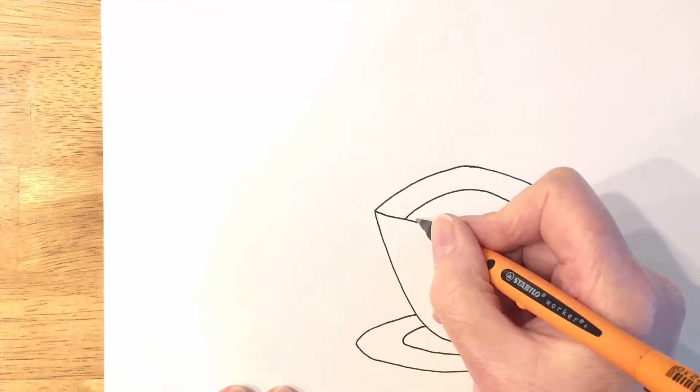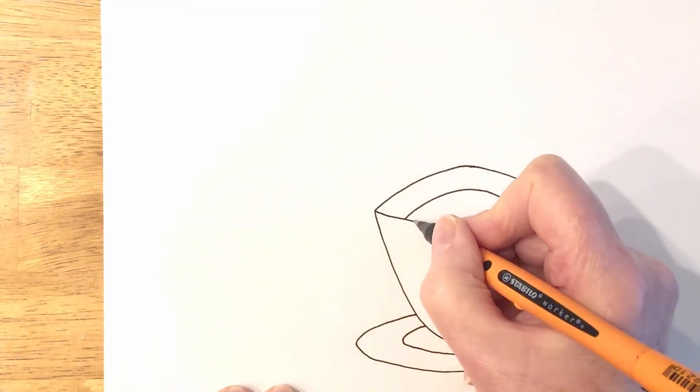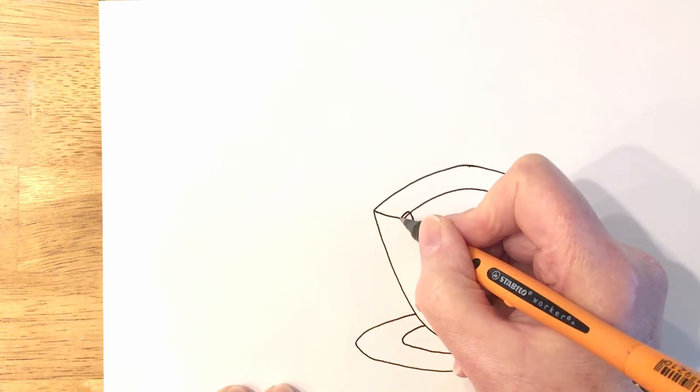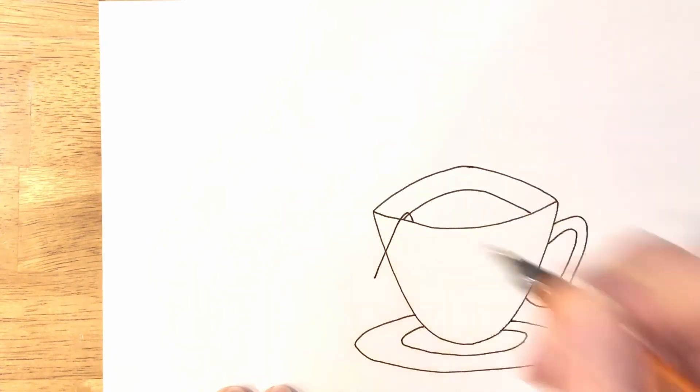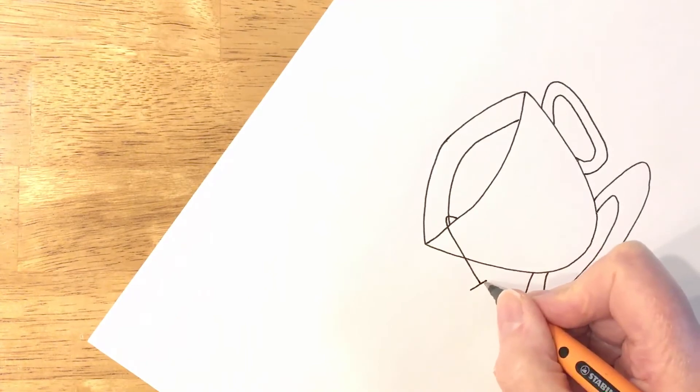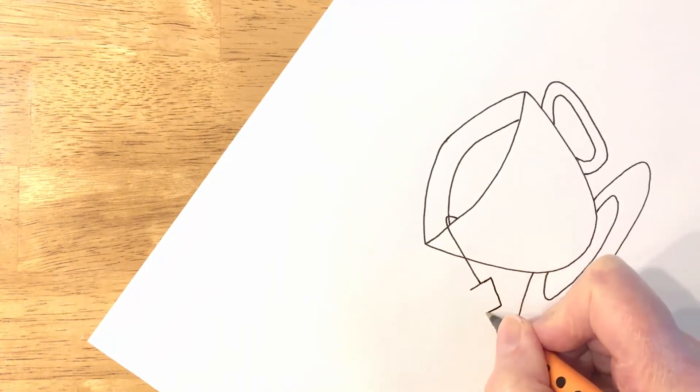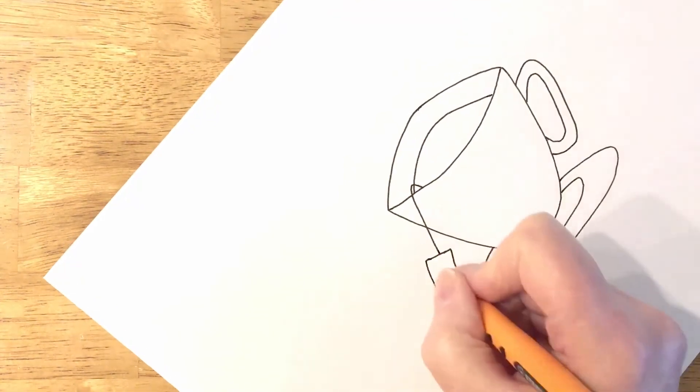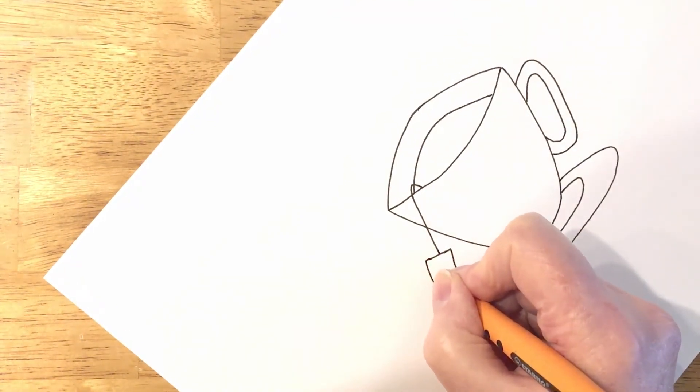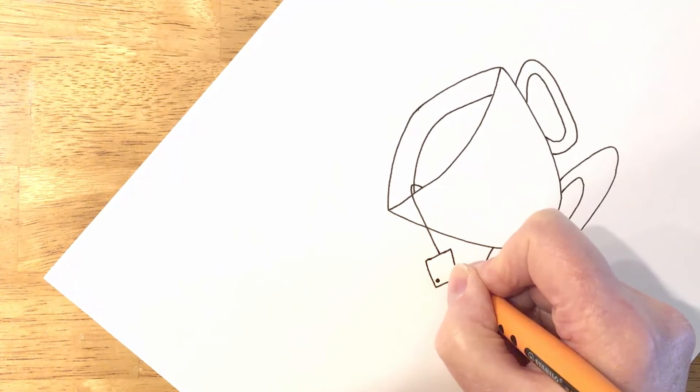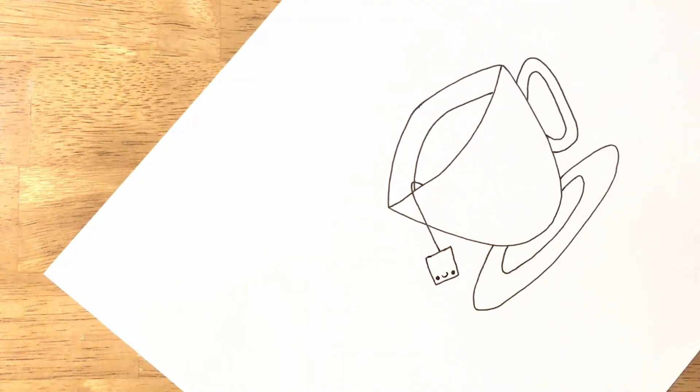So the tea bag's going to be coming out of the tea and out of the edge of the cup here. It's going to have a little tag on the end. And because it's kawaii, the tea bag's going to have kawaii eyes. So let's just give it kawaii eyes and a smile.